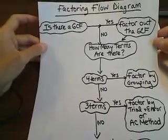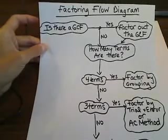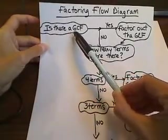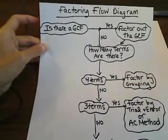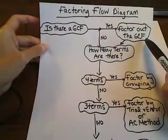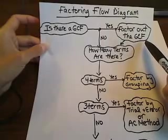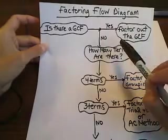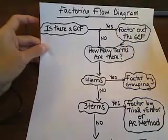Okay, so your factoring flow diagram—you always start with the question: is there a greatest common factor? So GCF right there stands for greatest common factor. If there is, then you're going to go over and the first thing you're going to do—the first thing you always do when you're factoring—is you want to factor out the greatest common factor.